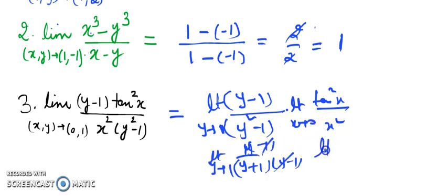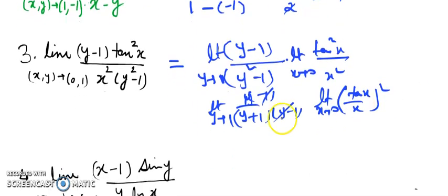Here, limit of tan θ/θ is 1. So here tan²θ you can write like that: tan x/x all squared as x→0. This value, when you plug in because it gets cancelled, when you plug in the value you are getting 1/2, and here you are getting 1. So it is 1/2.